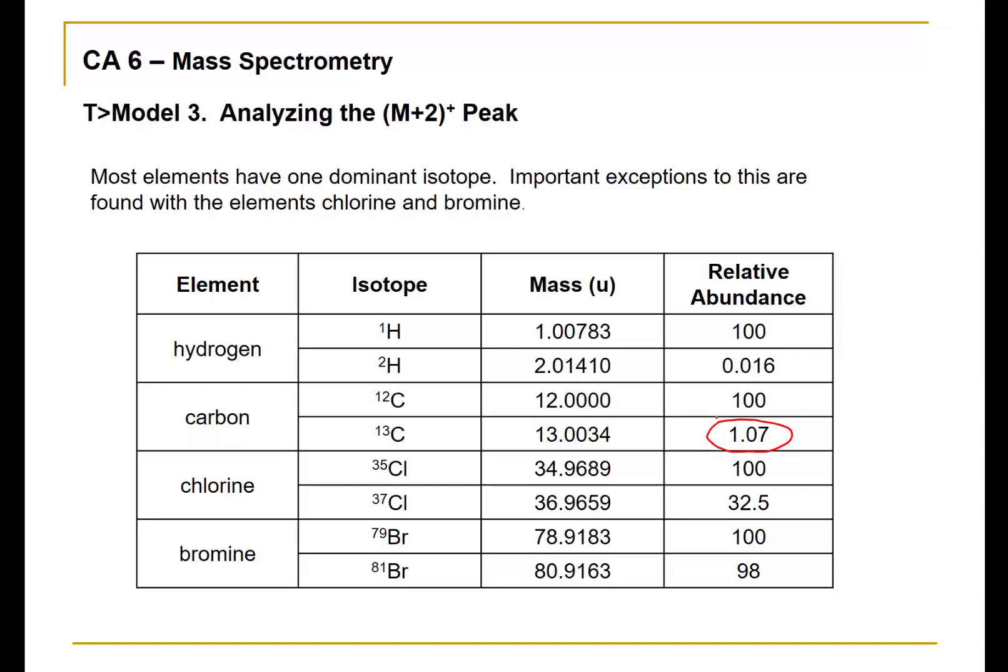Chlorine and bromine are exceptions to the idea that there's one common isotope. Chlorine-35 has a relative abundance of 100%, but chlorine-37 has almost 33% relative abundance, a significant amount of a second isotope. For bromine, the two isotopes are of almost equal abundance. This will drastically affect the appearance of a mass spectrum and will be a telltale sign that these elements are present.